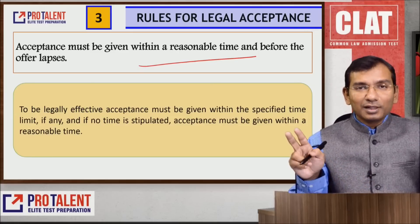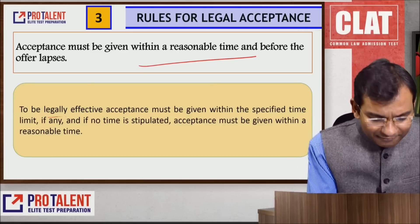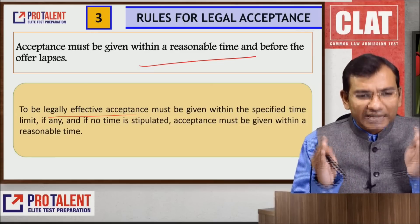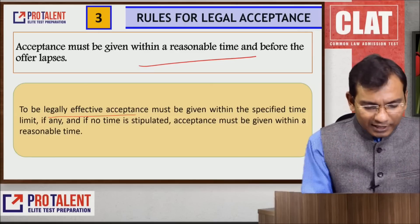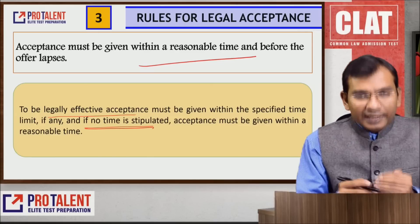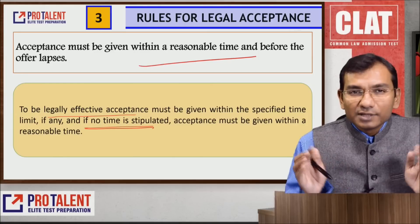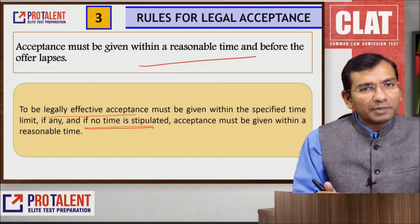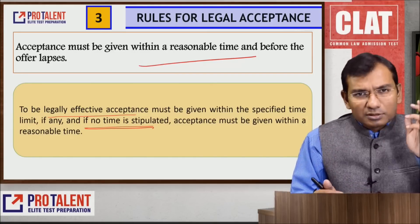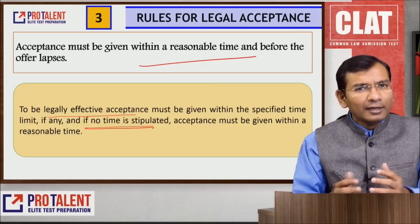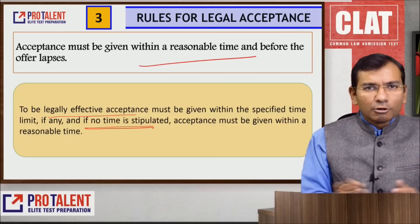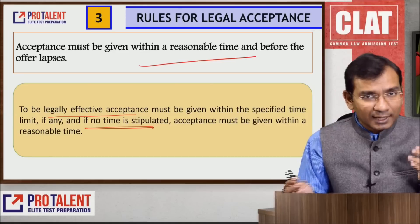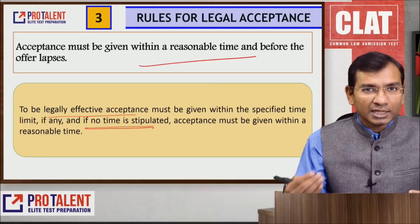Rule three: acceptance must be given within a reasonable time before the offer lapses. To be legally effective, acceptance must be communicated within a specific time period. If no time is stipulated, acceptance must be given within a reasonable time. What constitutes reasonable time depends upon the nature of the goods — for perishable goods, the reasonable time would be much shorter.